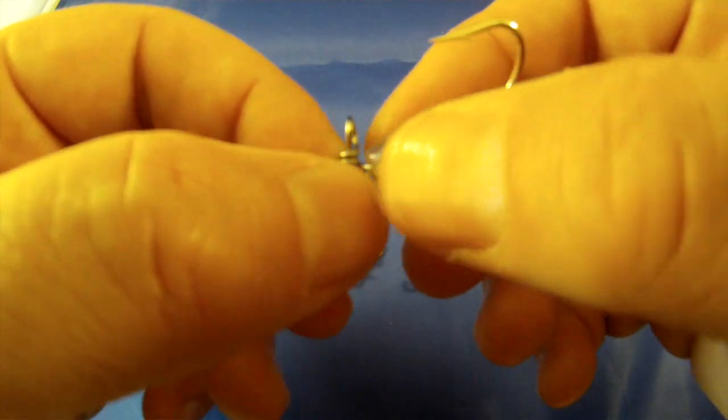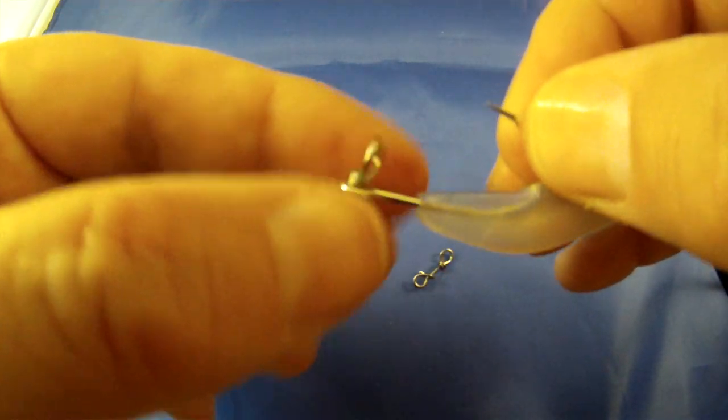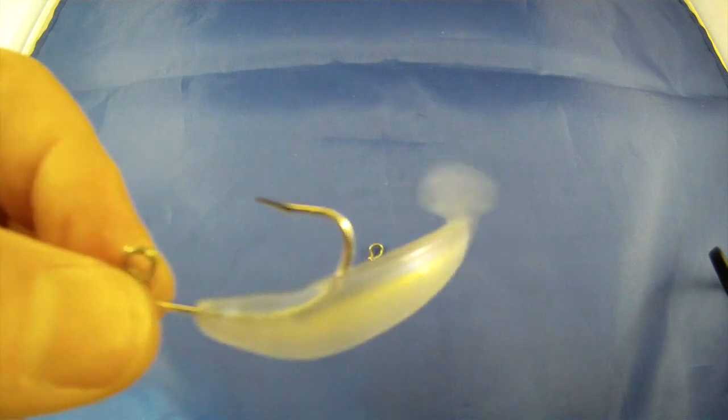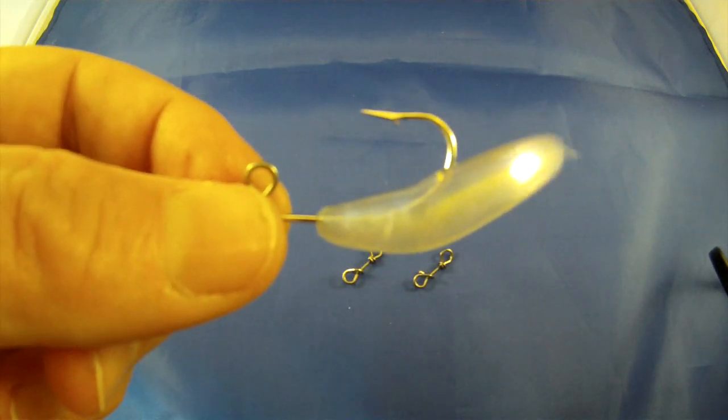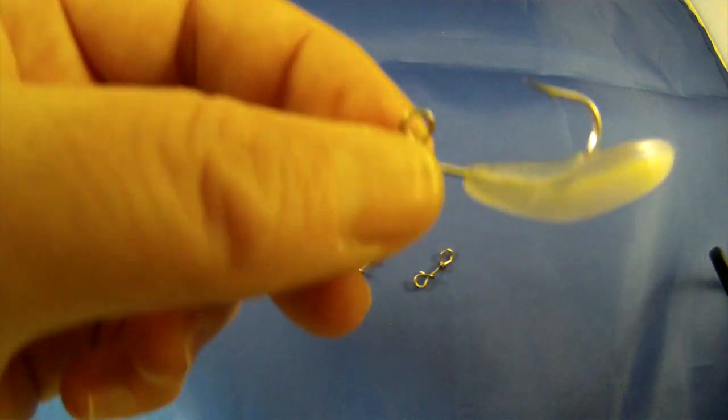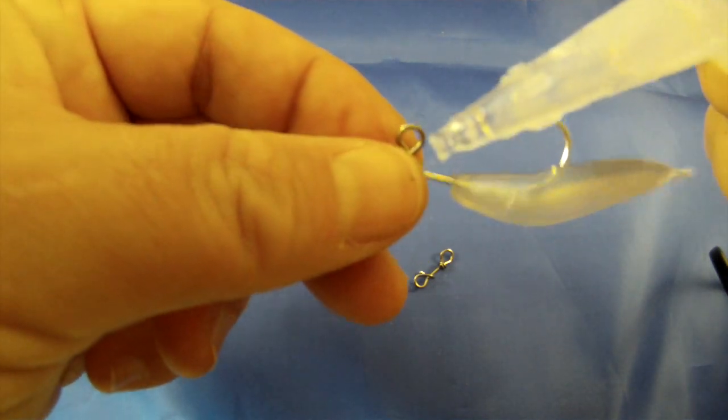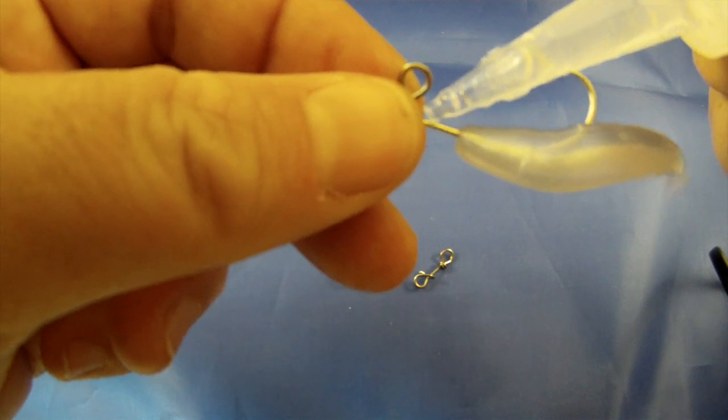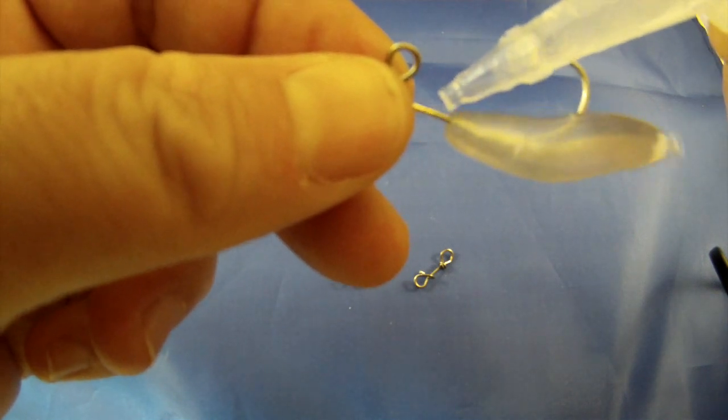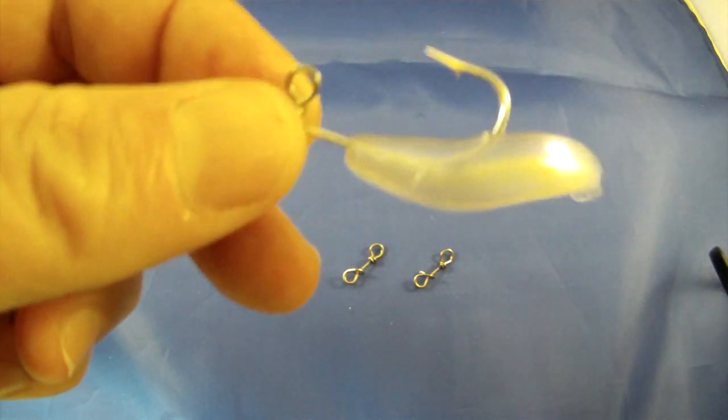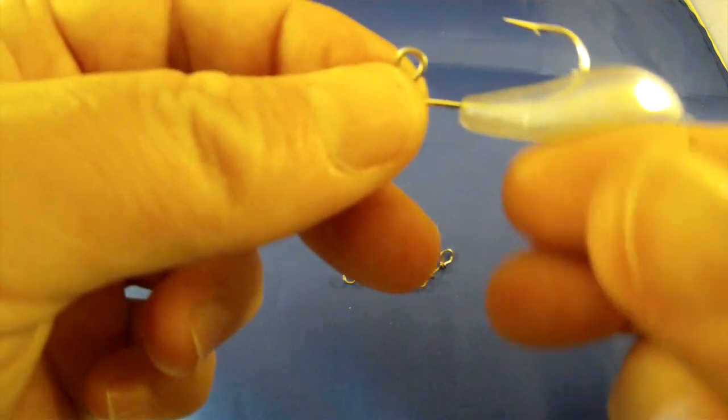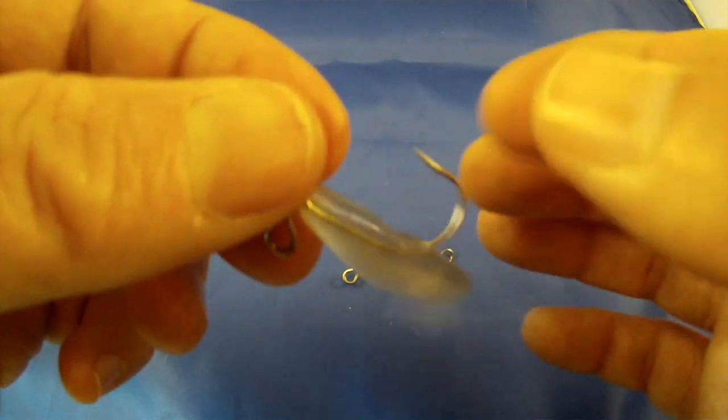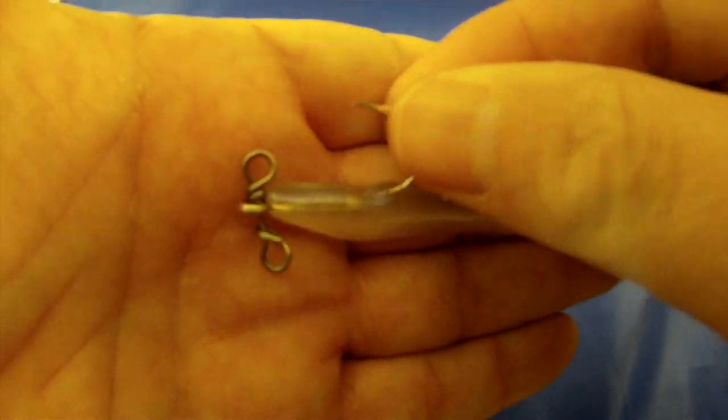I'm just going to pull this plastic back and I'm going to get my super glue. I'd probably use a brush-on applicator. I'm just going to drop a little bit right on this hook. And I'm going to slide it on. And you're done.